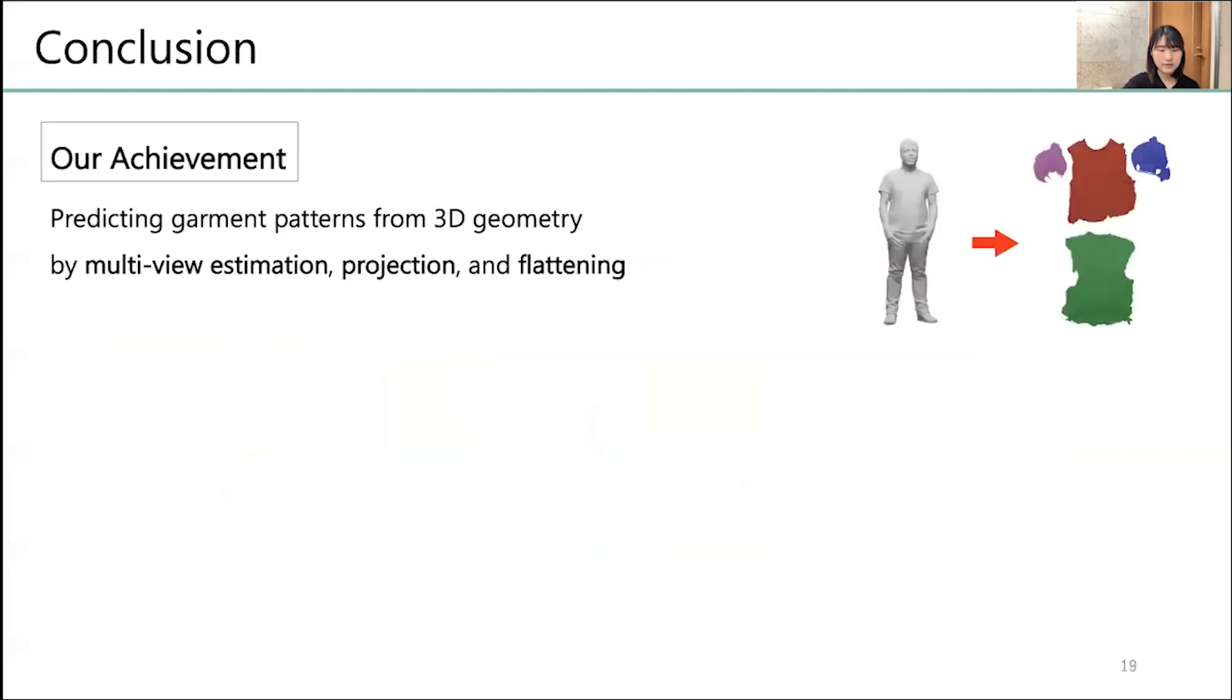In conclusion, we have achieved to predict a garment pattern from 3D geometry by three steps. That is, multi-view estimation, projection, and flattening.